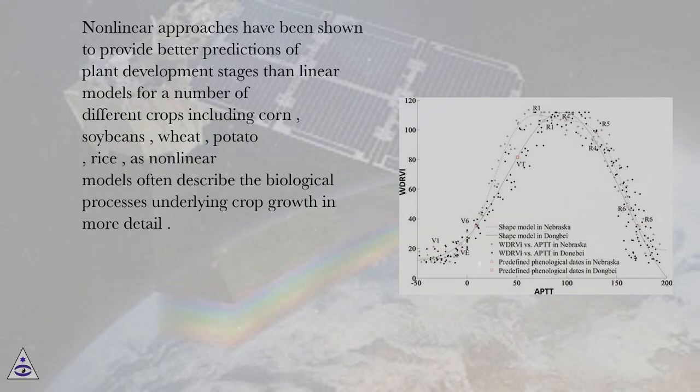Nonlinear approaches have been shown to provide better predictions of plant development stages than linear models for a number of different crops including corn, soybeans, wheat, potato, rice, as nonlinear models often describe the biological processes underlying crop growth in more detail.